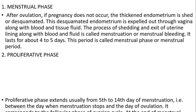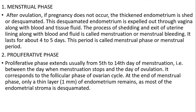The second is the proliferative phase. It extends from the fifth day to the 14th day of menstruation, that is between the day when menstruation stops and the day of ovulation. It corresponds to the follicular phase of the ovarian cycle. At the end of the menstrual phase, only a thin layer of around one millimeter of endometrium remains, as most of the endometrial stroma is desquamated.